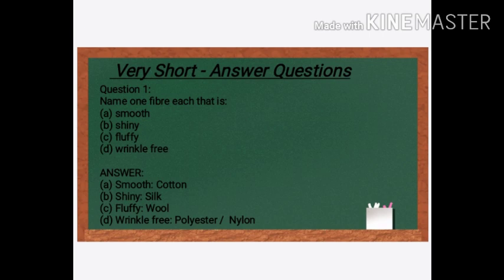Now let's move to the short answer questions. First question: Name one fiber each that is — A. Smooth: Cotton, B. Shiny: Silk, C. Fluffy: Wool, D. Wrinkle-free: Polyester or Nylon — both are correct answers.